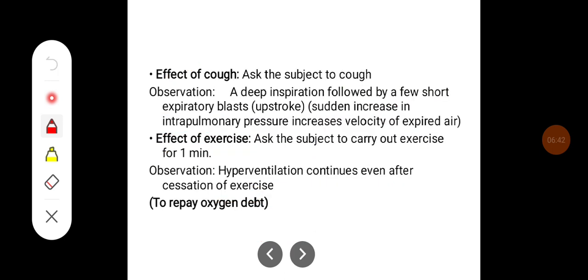The effect of cough: the subject is asked to cough. What you observe is a deep inspiration followed by a few short expiratory blasts recorded as upstrokes, and a sudden increase in intrapulmonary pressure, which increases the velocity of the expired air.